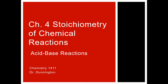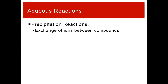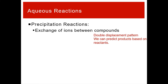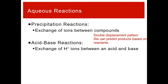Now we want to move on to acid-base reactions. Precipitation reactions we already covered — we're exchanging ions between compounds, swapping cations and anions. We can recognize that pattern when we react ionic solutions as reactants with double displacement. Acid-base reactions offer a similar idea, but instead of exchanging any sort of ions between compounds, we're going to be exchanging H+ ions between what we call an acid and a base.